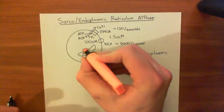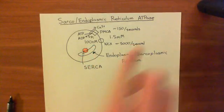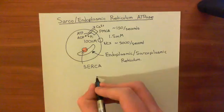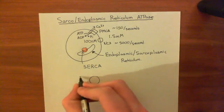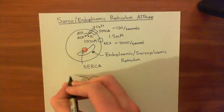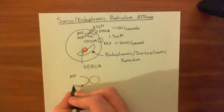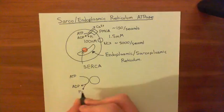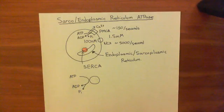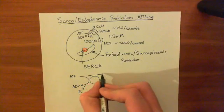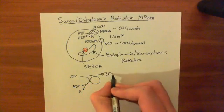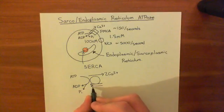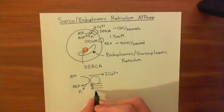What does SERCA do? SERCA requires ATP, because it's an ATPase. Basically, what it does is it takes in a molecule of ATP and hydrolyzes it to ADP and inorganic phosphate. With the energy released from that hydrolysis, it pumps two calcium ions into the sarcoplasmic reticulum. And in exchange for that, it also brings free protons out of the sarcoplasmic reticulum.